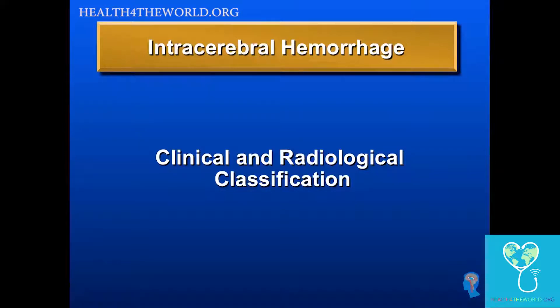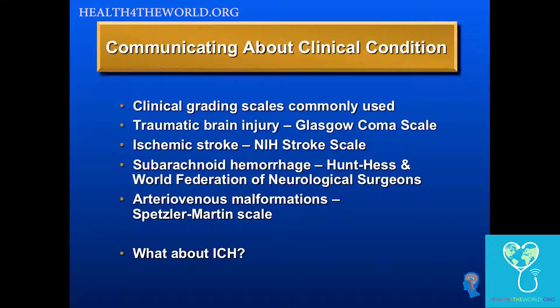The next topic is clinical and radiological classification of intracerebral hemorrhage. When we have sick patients with neurological conditions, we're used to using clinical grading scales. For traumatic brain injury, the Glasgow Coma Scale is standard. For acute ischemic stroke, the NIH Stroke Scale is used. For subarachnoid hemorrhage, we use the Hunt-Hess or World Federation of Neurological Surgeons Scale. For arteriovenous malformations, the Spetzler-Martin Scale. One of the problems with ICH is there hasn't been a standard uniform scale, making it difficult to understand what we're talking about when we see that acute patient.